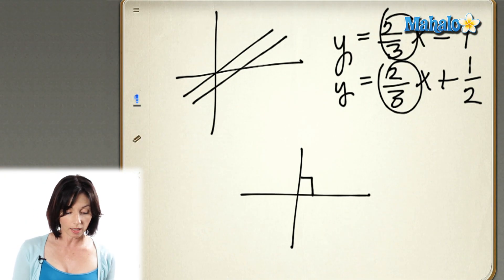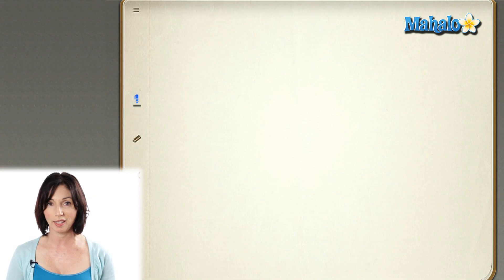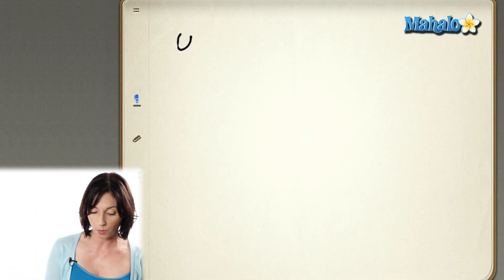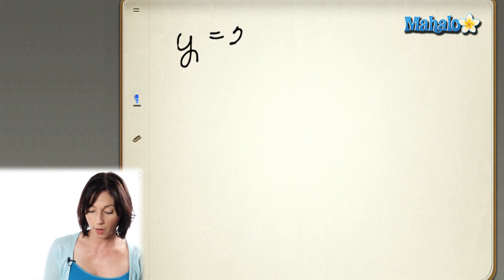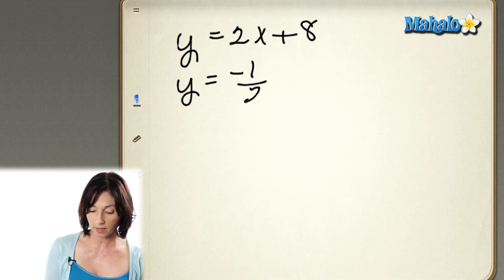Now you can tell if two lines are perpendicular to each other also by looking at their slopes. So let's say we have the line y equals 2x plus 8 and y equals minus 1/2 x plus 14.